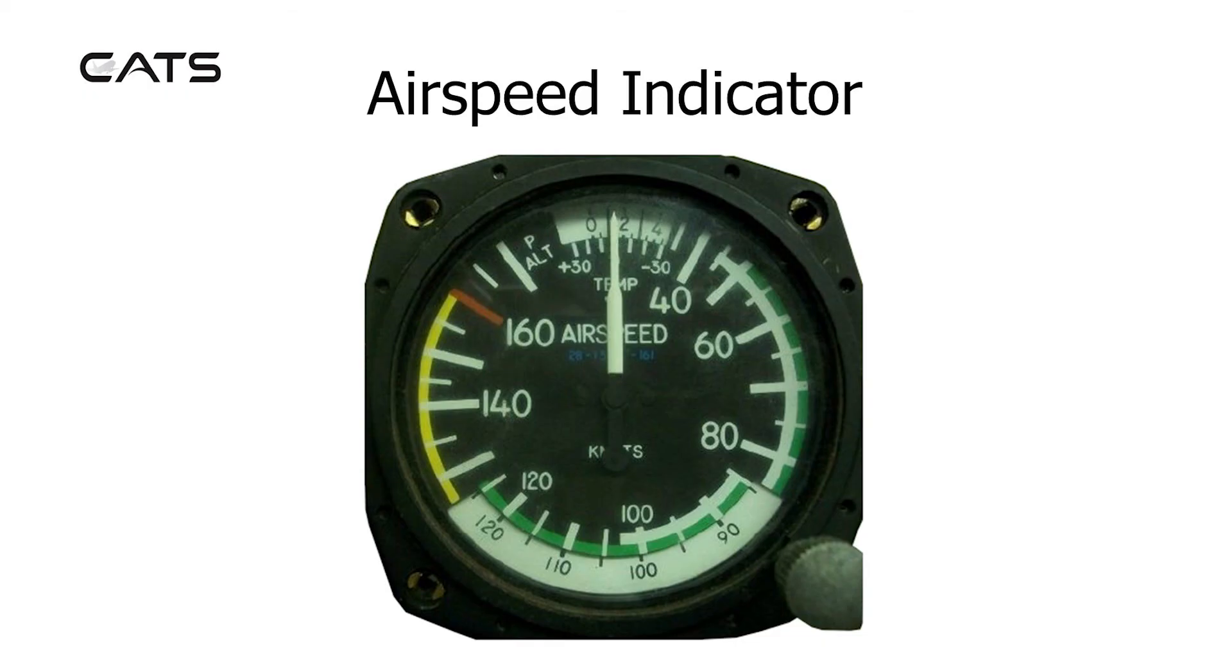The airspeed indicator. On this dial, airspeed is displayed in knots and can be in miles per hour or both. There's also a correction where true airspeed can be displayed if the temperature and pressure altitude are selected for the given conditions using a knob at the bottom right hand side of the instrument.